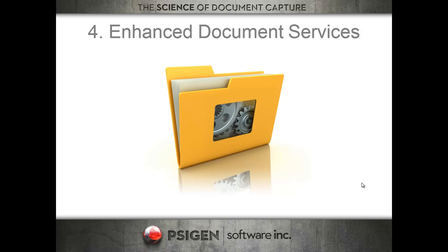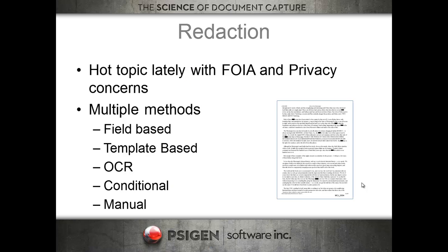Number four is enhanced document services. In SciCapture's core functionality, you've got things like redaction. We have several methods of document redaction — everything from basic template redaction, to pattern and OCR-based redaction, to field-based redaction where we can take a person's name and auto-redact it. We also have the ability to output both a redacted and a non-redacted copy depending on the destination repository.